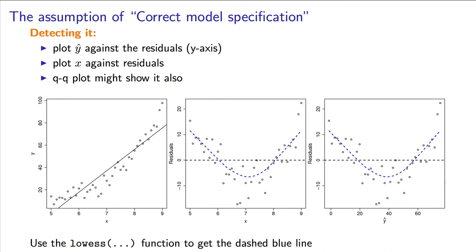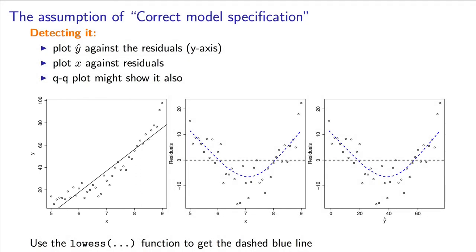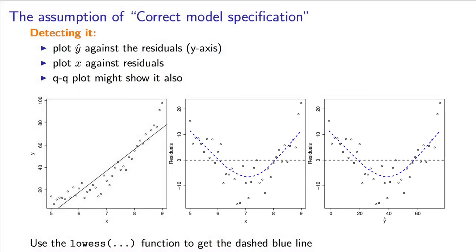Here, for example, we see a model where, if you look carefully enough, you can notice a quadratic shape in the plot of x against y, though it's not necessarily obvious. The residuals, however, when plotted against x, or the residuals when plotted against y-predicted, as shown here on these other two plots, shows a very strong sense of curvature. That dashed blue line has been added by using the LOWESS function that I've shown you previously.